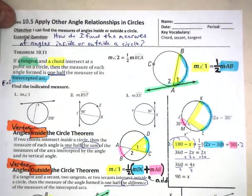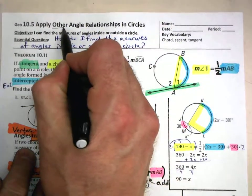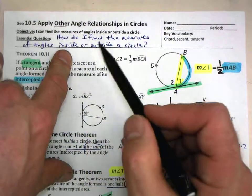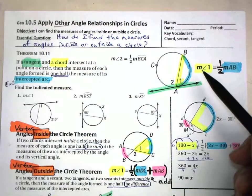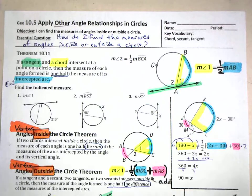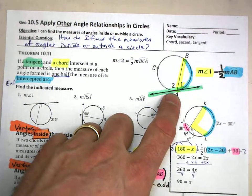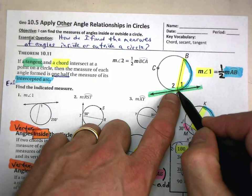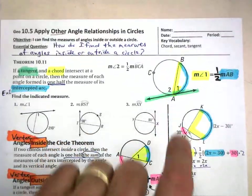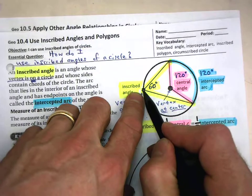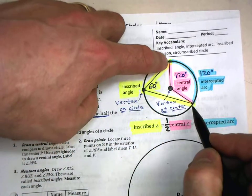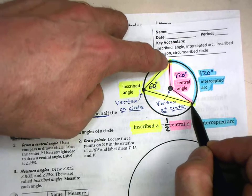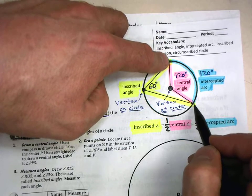But here in 10.5, we're looking at other angle relationships — how do I find the measures of angles inside or outside of a circle? Let's first look at something very similar to an inscribed angle. Remember, inscribed is when the vertex is on the circle, with two rays or segments creating the angle that stay inside the circle and intersect at the intercepted arc.